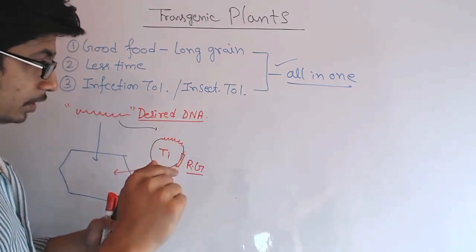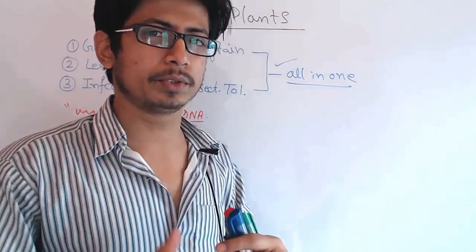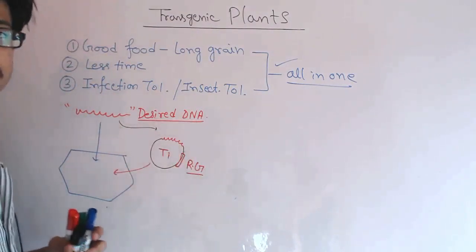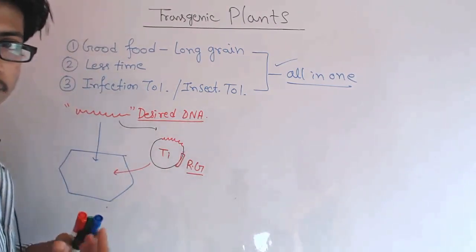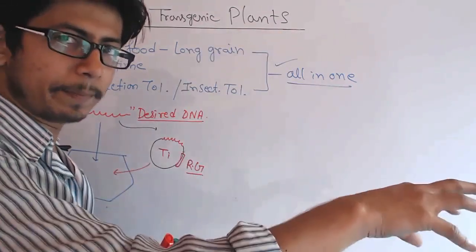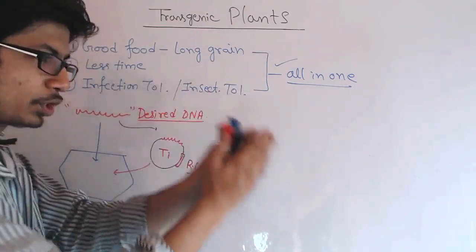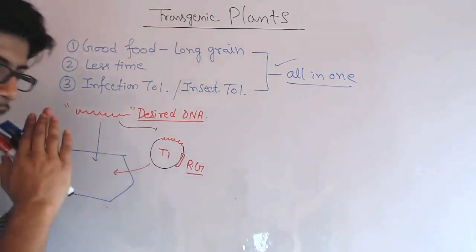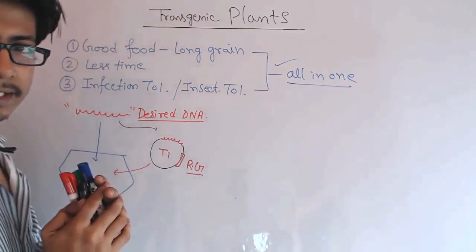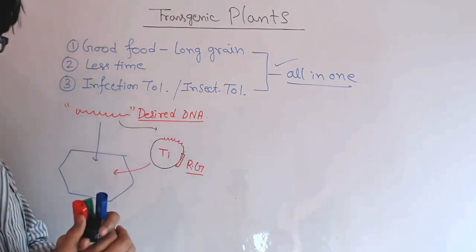Another way to deliver DNA is directly into the plant cell. Since plant cells have a hardy cell wall surrounding them, we need special methods. One option is the gene gun, which can shoot DNA into the cell. We can also use viral vectors — viruses infect the plant, and whatever material is inside the virus gets delivered into the plant cell. We attach our desired gene inside the viral body; when the virus infects the plant, it releases all the genetic content including our desired gene into the plant cell.